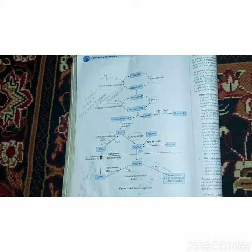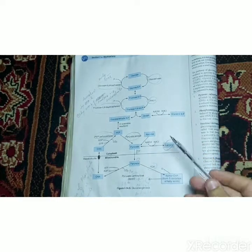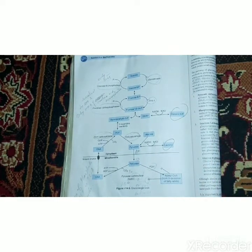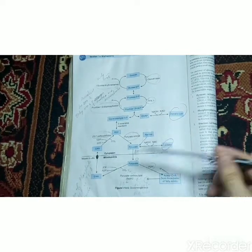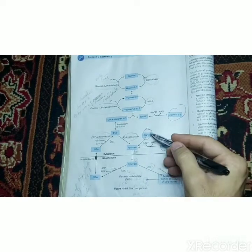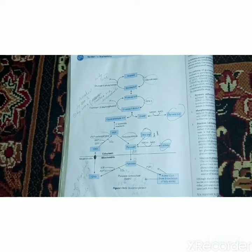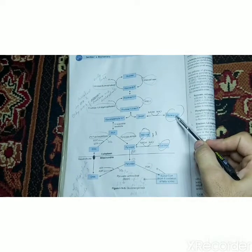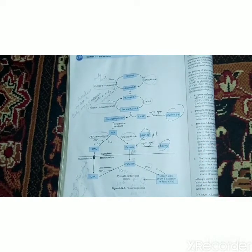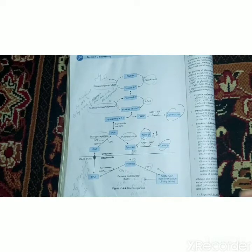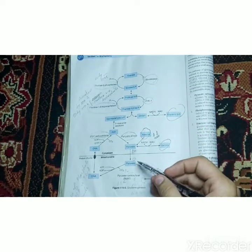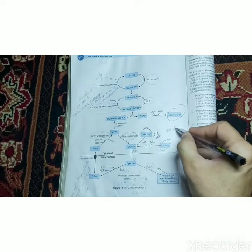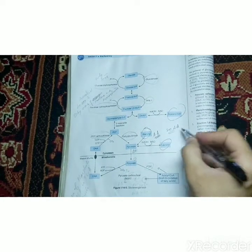We have to make glucose to keep the body working. This glucose is made from non-carbohydrate sources. Three main sources are used for this pathway: number one is lactate, number two is glycerol-3-phosphate, which comes from fatty acids, and number three is alanine, which is an amino acid. Alanine is not the only amino acid used; out of 20 amino acids, 18 can be used for gluconeogenesis.